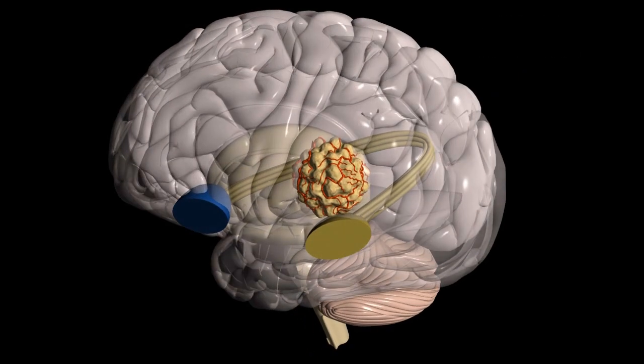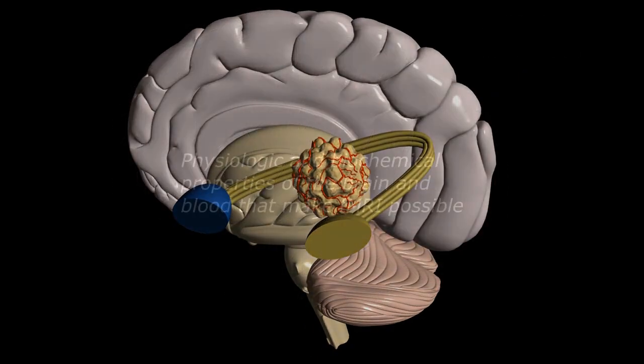Over the next few minutes, we're going to discuss the physiologic and biochemical properties of the brain and blood that make functional MRI possible.